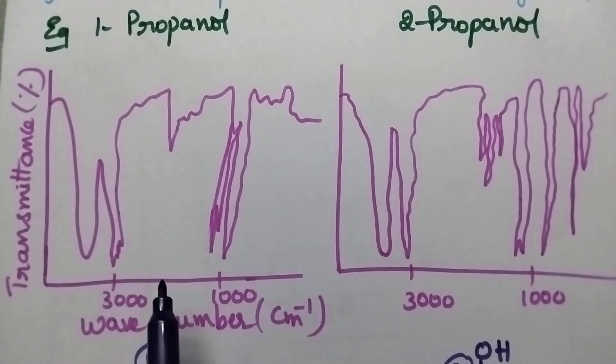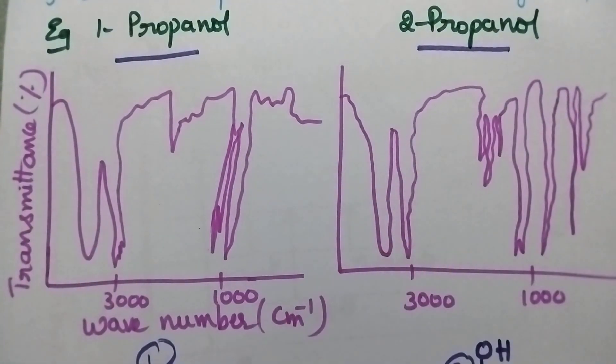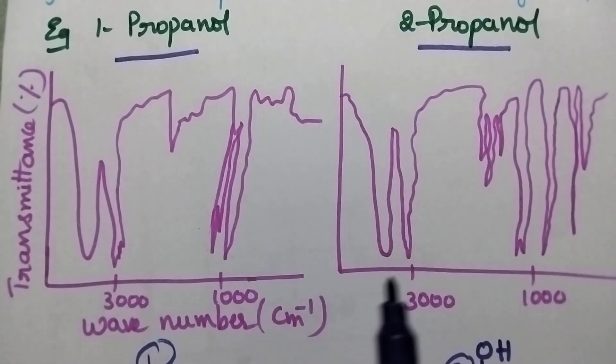If you carefully compare the spectrum of 1-propanol with 2-propanol, these two spectra are different, and hence we can say that these two compounds are different from each other.